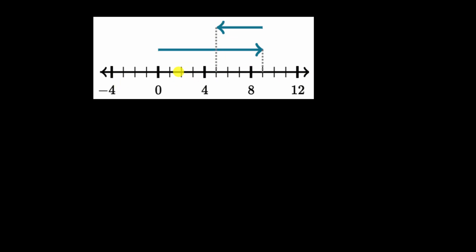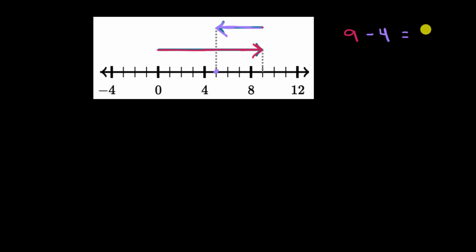This number line diagram shows adding or subtracting two numbers. Starting at zero and going nine units to the right gives a positive nine. Then there's an arrow that starts at the tip of that nine and goes four units to the left. We can think of that arrow as subtracting four, so it could just be nine minus four, which equals five — where we end up. That's one way to represent this as an addition or subtraction equation.